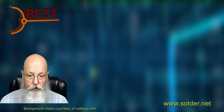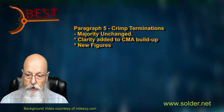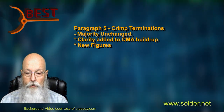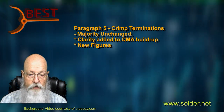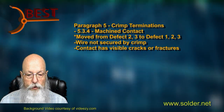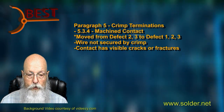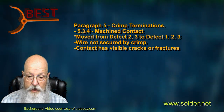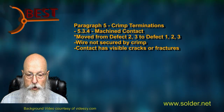Much of Section 5, the criteria of crimped terminations, remains unchanged. There has been an update to the CMA recommendations to make it more specific and to add figures with examples of different methods of CMA buildup. One minor change is in Section 5.3.4, where the conditions of the wire not being secured in the crimp and any visible fractures have been moved from defect for Classes 2 and 3 to defect for all classes — 1, 2, and 3.